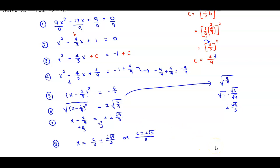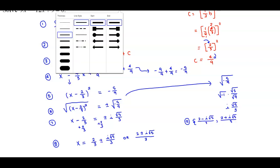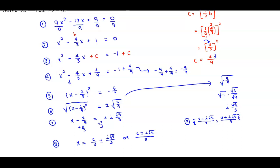Here are two ways to write the solution set. The first is: 2 minus i times the square root of 5 over 3, and 2 plus i times the square root of 5 over 3. Or we can write it as 2 plus or minus i times the square root of 5, all over 3.